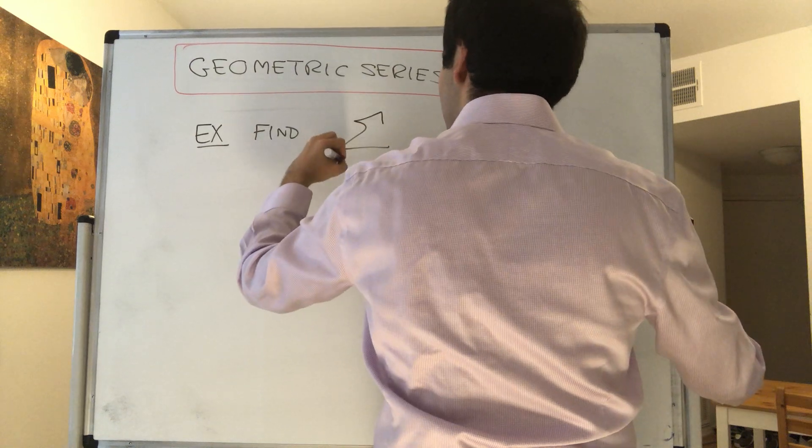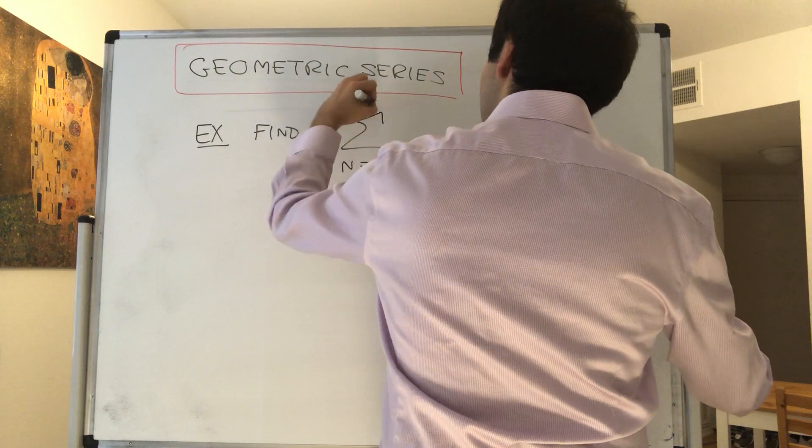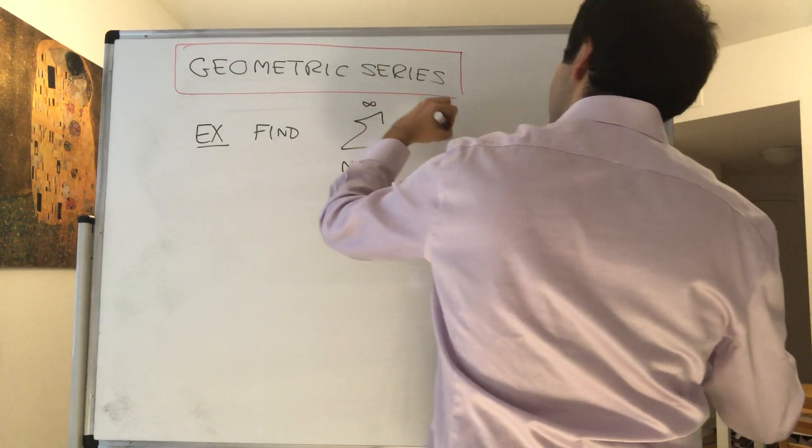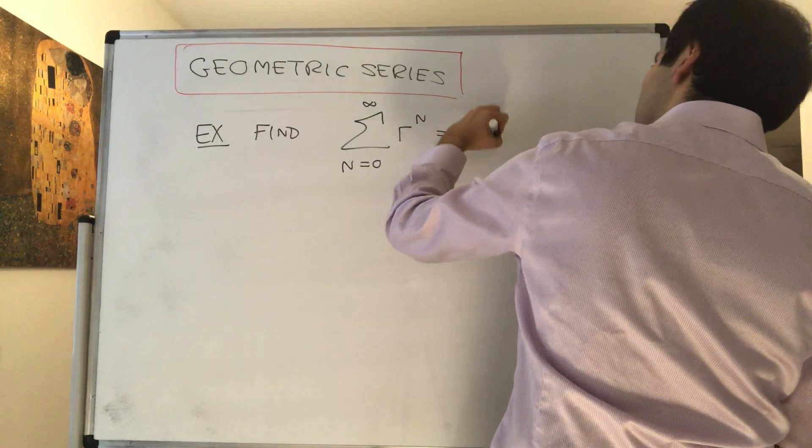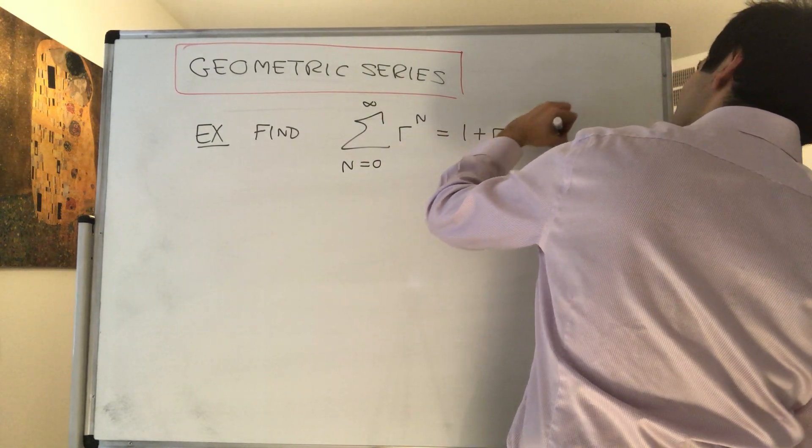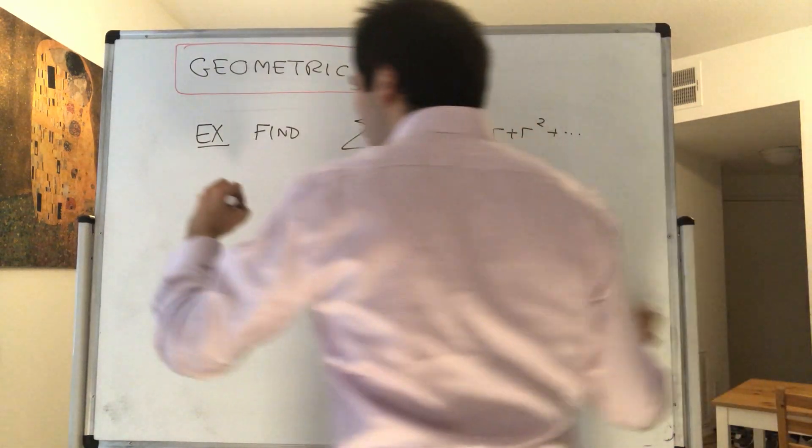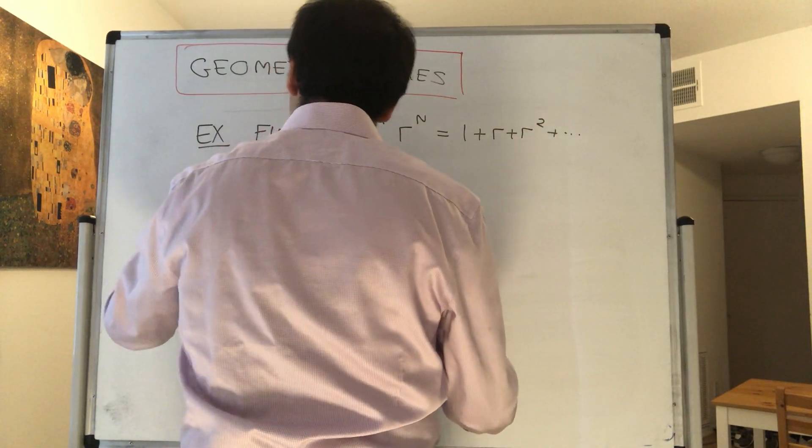Our goal for today is to find the value of the following sum: find the sum from n from 0 to infinity of r to the n, which is just 1 plus r plus r squared plus dot dot dot, where r is a real number.